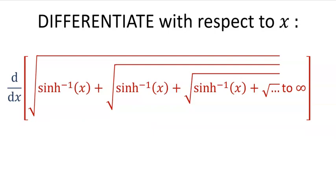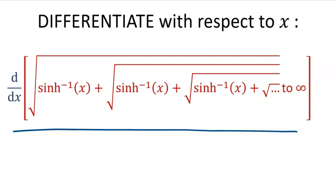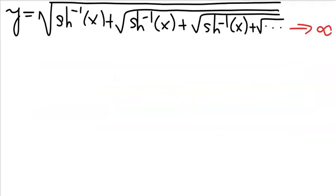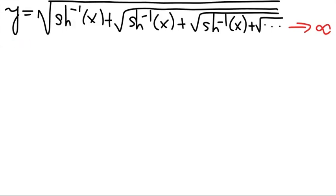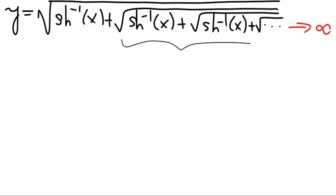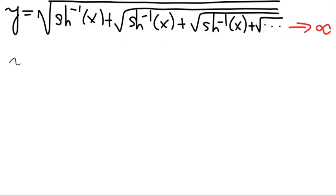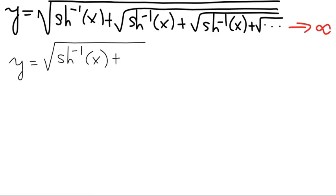In this video, we shall differentiate the function shown. Note that this is a function with infinite self-repeating form. So let's call the function that we want to differentiate y. An important observation is that since this is a self-repeating form function and it repeats all the way with an infinite number of terms, we can label all those terms as y as well. That means we can write the given function as arc hyperbolic sine of hyperbolic sine of x plus y.